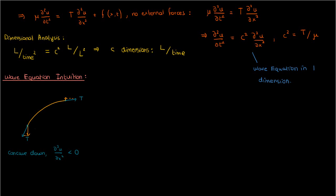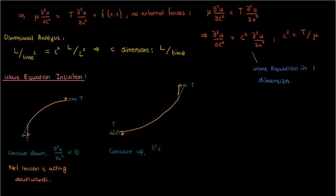So where's the direction of the net tension force in that case? It's downwards. This means that when we have a concave down string, the net tension is going to be directed downwards. But what about when the string is concave up? Well, in this case, the tension force on the right end of the string has a larger vertical component than the tension force on the left end of the string. So the net direction of tension will then be upwards.